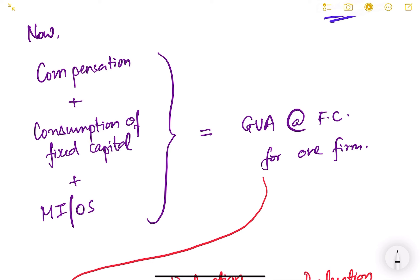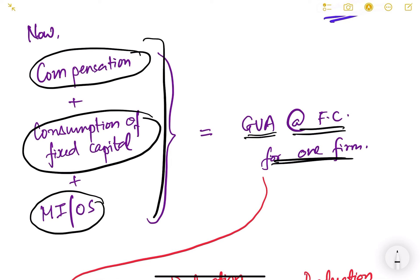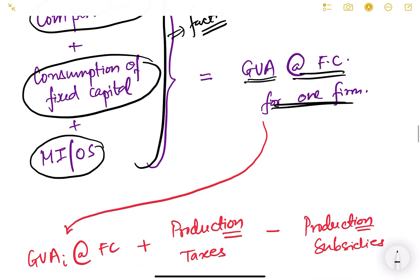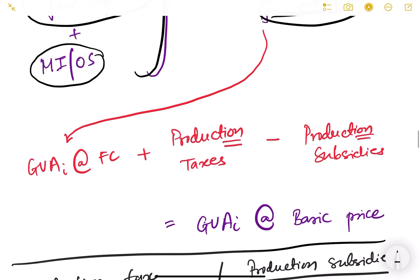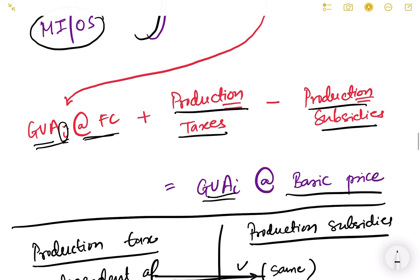When we add compensation, mixed income or operating surplus, and consumption of fixed capital for a given firm, we get the Gross Value Added (GVA) at factor cost for that one firm. These are at factor cost because we are looking at payments given to the different factors of production.